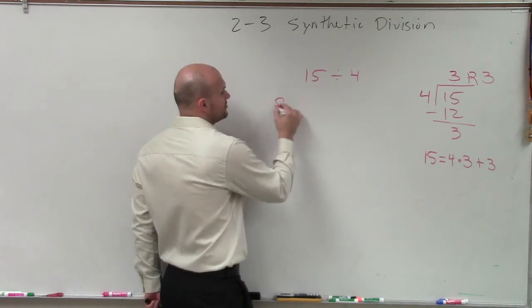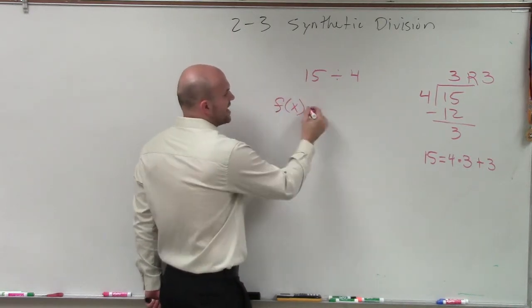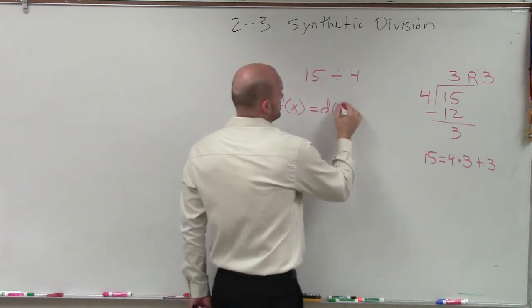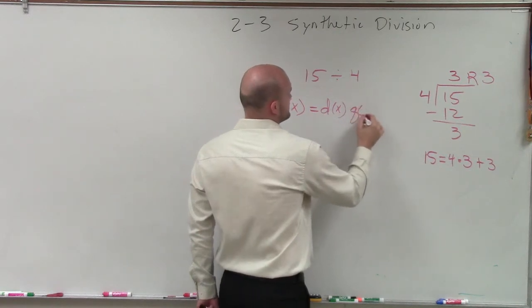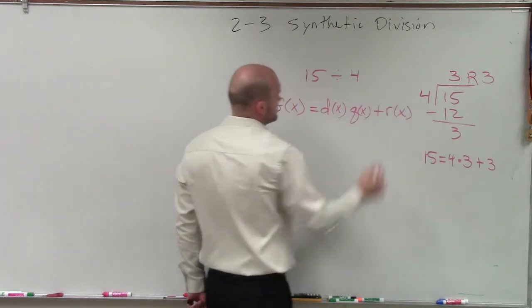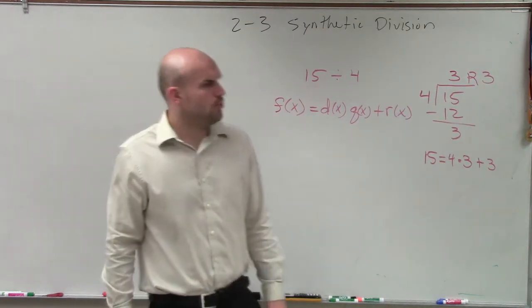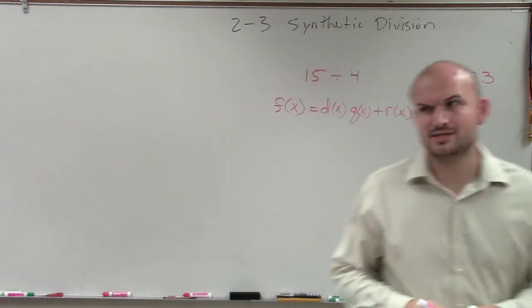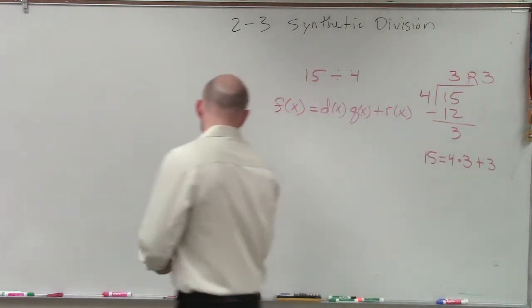And the division algorithm looks very simple like this: F of x equals D of x times Q of x plus R of x.